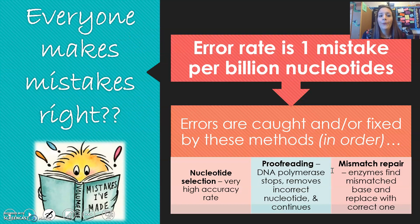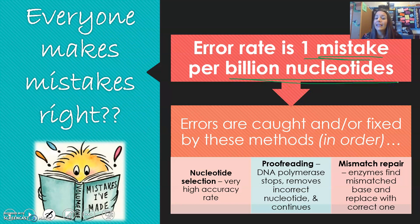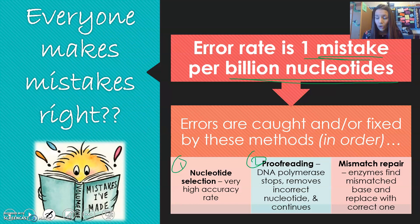DNA replication is actually pretty good at not making mistakes. The error rate is just one mistake per billion nucleotides added, and even if an error is made, it's caught and fixed in several ways. First, nucleotide selection — DNA is very good at selecting the proper nucleotide. If that fails, proofreading kicks in: DNA polymerase stops, goes back, removes the wrong nucleotide, and adds the right one. If that still doesn't work, another enzyme goes back to find mismatched bases and replaces them with the correct ones.